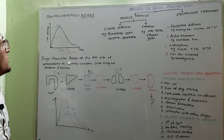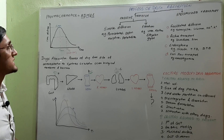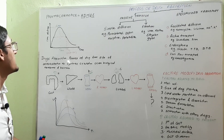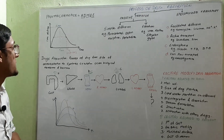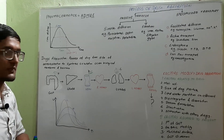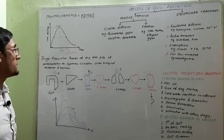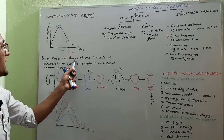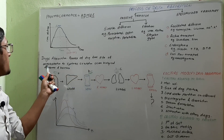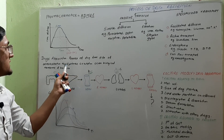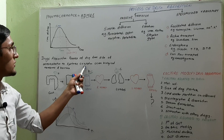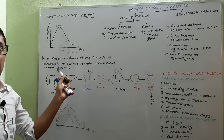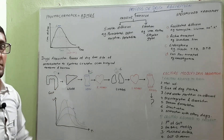Now I am going to discuss the first part of pharmacokinetics, that is drug absorption. Simply, drug absorption means the passage of a drug from the site of administration to the systemic circulation by crossing the biological membrane.